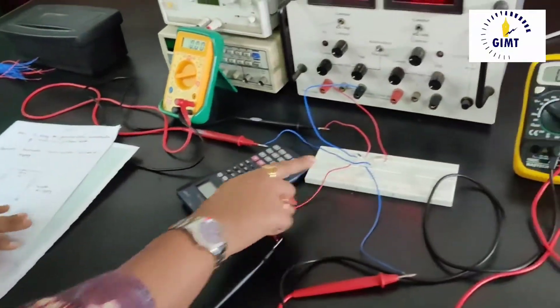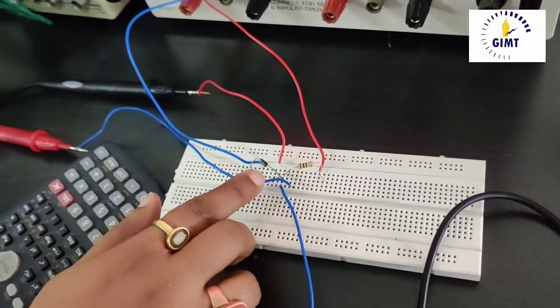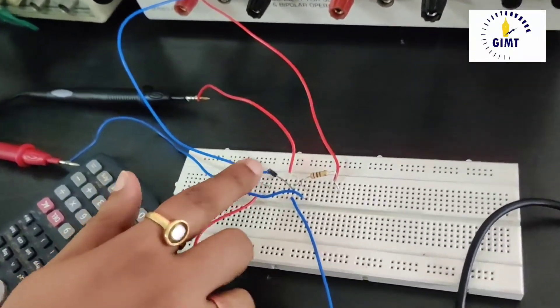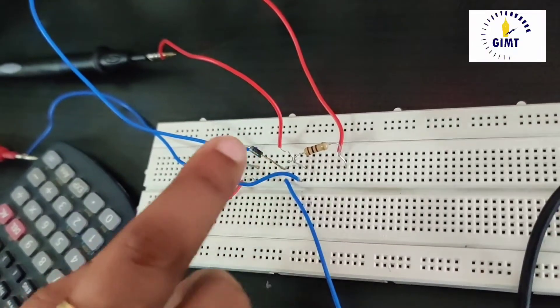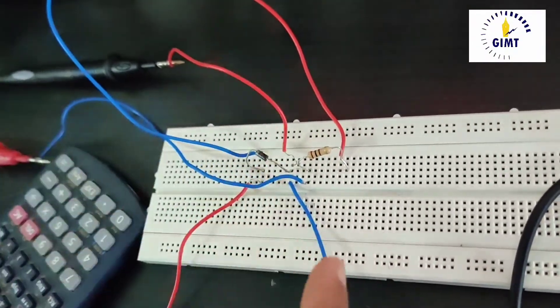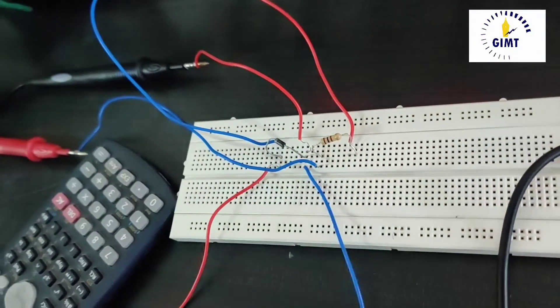This is the setup of the circuit. Here we have connected the diode, this grey portion. This is showing the cathode part. We see that this diode is connected in forward bias condition. We have connected a 100 ohm resistor to the positive to the anode part of the diode.